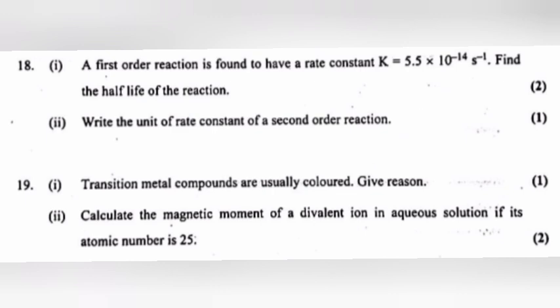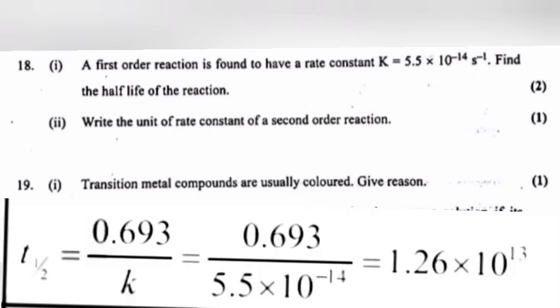Question 18 Part 1: A first order reaction has rate constant k = 5.5 × 10⁻¹⁴ s⁻¹. Find the half-life. Answer: t½ = 0.693 / k = 0.693 / (5.5 × 10⁻¹⁴) = 1.26 × 10¹³ s. Part 2: Write the unit of rate constant of a second order reaction. Answer: mol⁻¹ L s⁻¹.